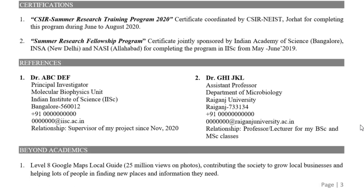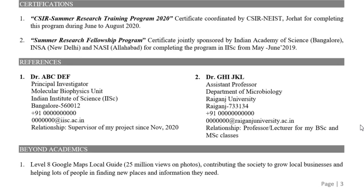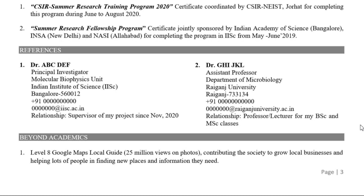You can also include a certificates section for significant internships or relevant online courses. For references, some applications have a dedicated section; if not, you can list one to two references in your CV. It is recommended to include your most recent research supervisor and one from your master's or bachelor's academics. Provide their contact details, official institutional email, and your relationship with them. Always ask their permission before listing them as a reference.